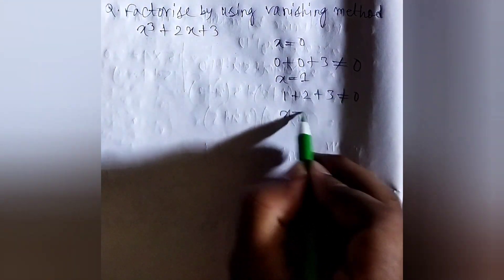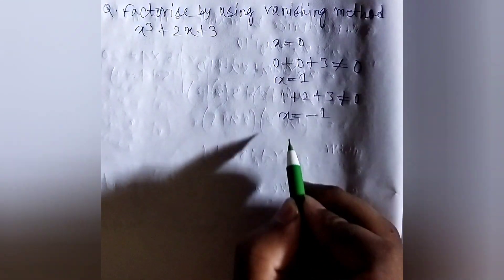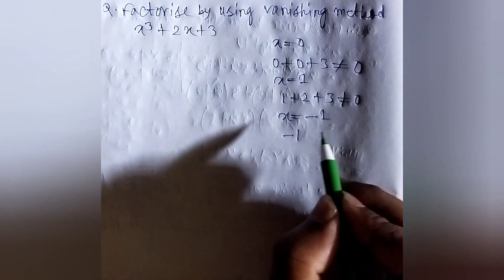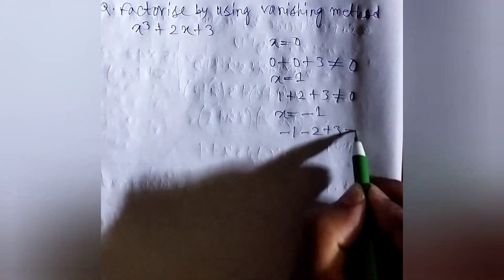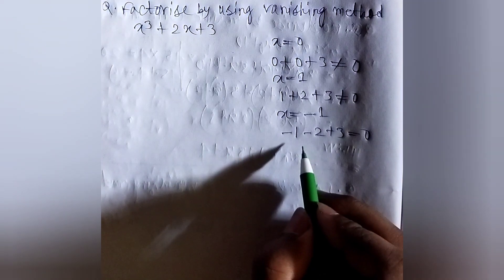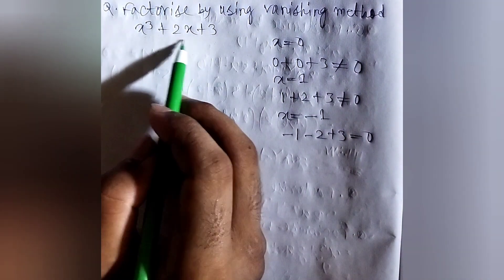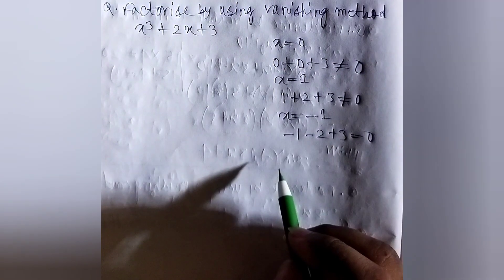For x equals minus 1: minus 1 minus 2 plus 3 equals 0. So, for x equals minus 1, this polynomial becomes 0. So, x plus 1 will be a factor of this polynomial.